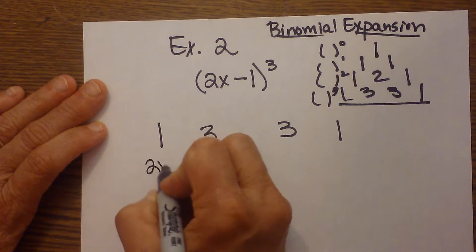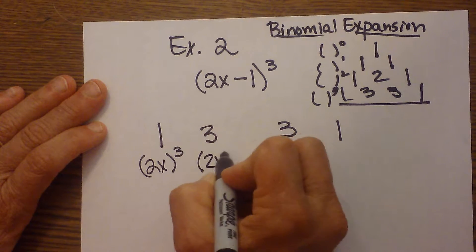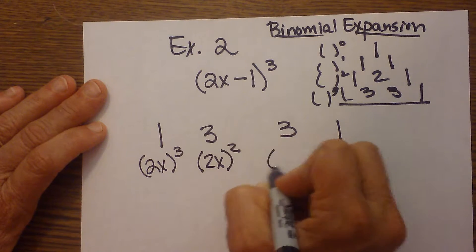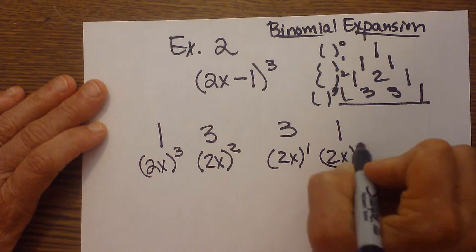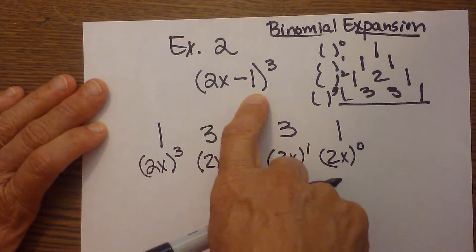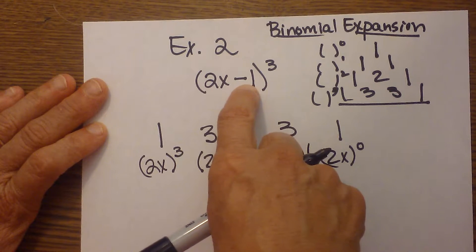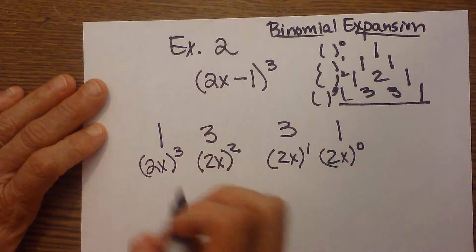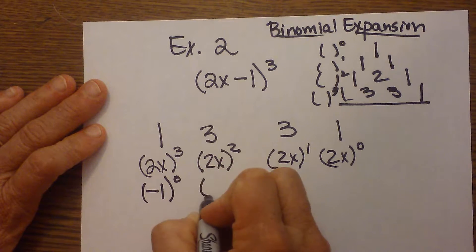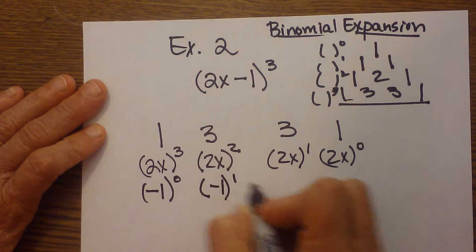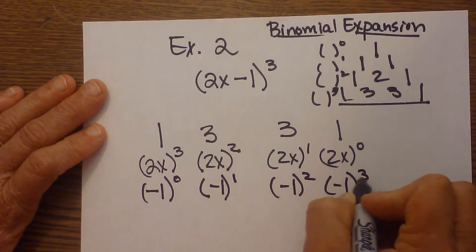So 2x quantity cubed, the second term is 2x quantity squared, then 2x to the first, and then 2x to the zero. Then I'm going to take my second term, or the second part of my binomial, and I have a negative 1, and I'm going to ascend. So it's going to increase. I start with a zero power, then I go to the first power, then I go to the second power, and then negative 1 to the third power.